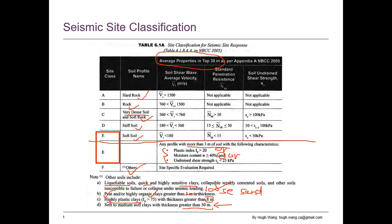On the table we can see there are three criteria. The first is shear wave velocity. The second is the standard penetration N-value, but the N-value is corrected to 60% energy output for the hammer and also corrected to 100 kPa overburden stress — normally we call it N₁(60). The third criteria is undrained shear strength.